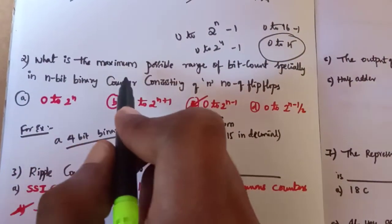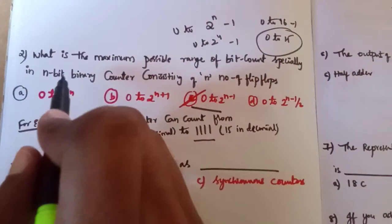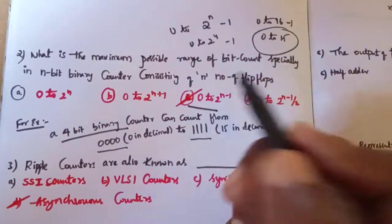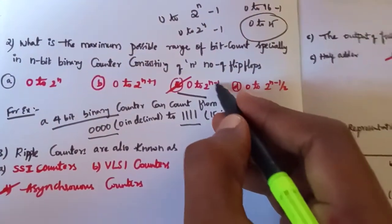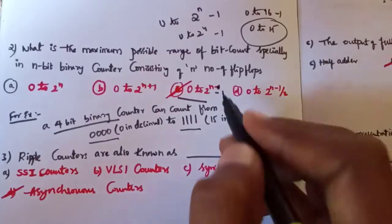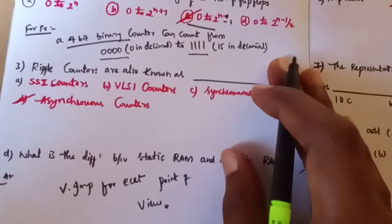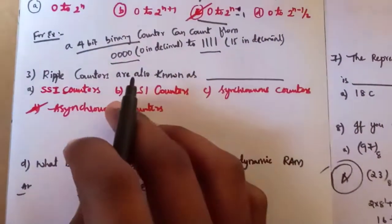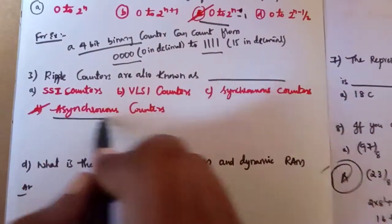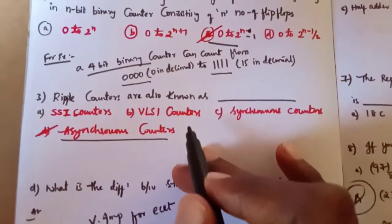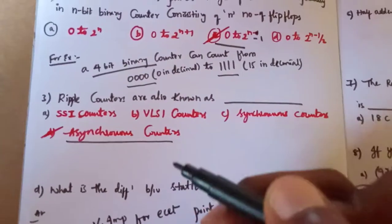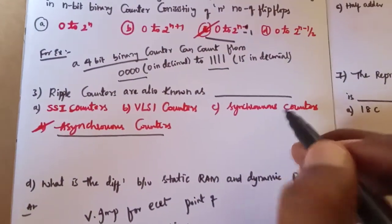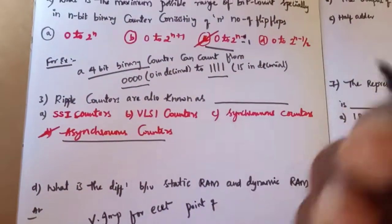What is the maximum number of possible range of bit counts? For an n-bit binary counter consisting of n number of flip-flops, the formula is 0 to 2^n minus 1. Ripple counters are also known as asynchronous counters.